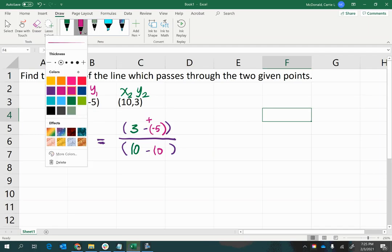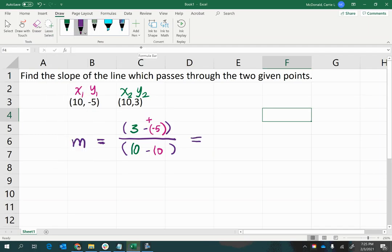And notice that when we simplify this, we're going to get 3 plus 5 in the top, which is 8, and 10 minus 10 in the bottom, which is 0.